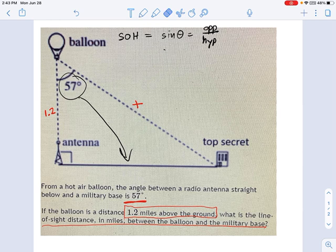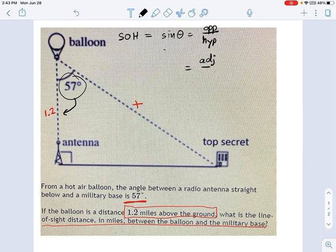I want something else. I want to know what's going to relate x to 1.2. Now x is the hypotenuse, and 1.2 is adjacent to 57. So which one of these relationships is adjacent and hypotenuse? Well, it's not sine. You should think of cosine.